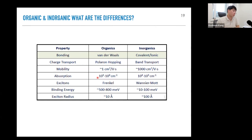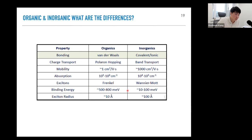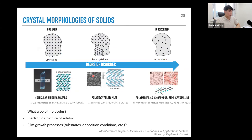Frenkel excitons are small and strongly bound; Wannier-Mott excitons are larger and weakly bound. This is fundamentally related to the dielectric constant, where polarizability tends to be much stronger in organics than inorganics. Now let's move on to transport. To look at transport, I'll give a brief introduction to the Drude model and Ohm's law before going into details. We'll cover three different types of organic material crystal morphologies: molecular single crystals, polycrystalline films of small molecules, and polymeric semiconductors with semi-crystalline or amorphous morphology.